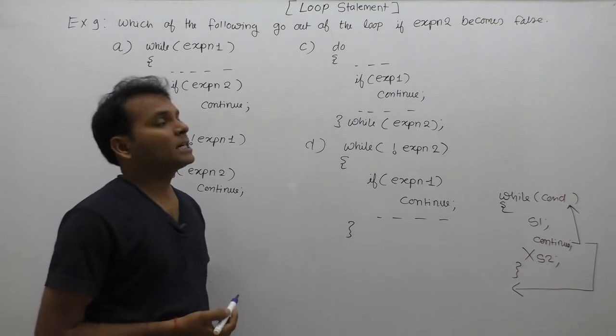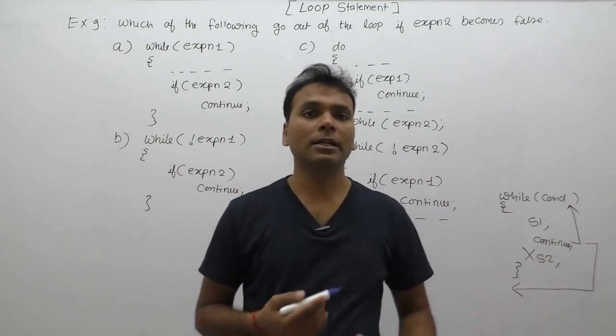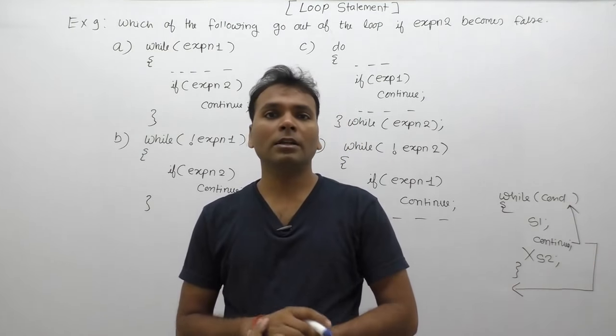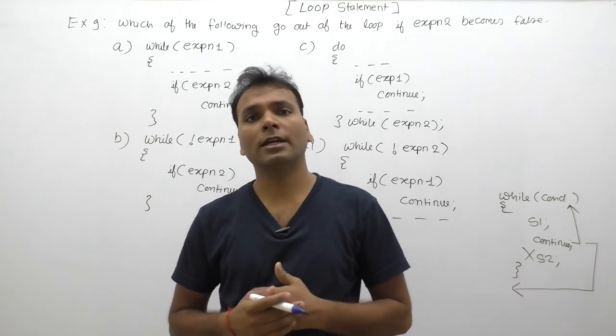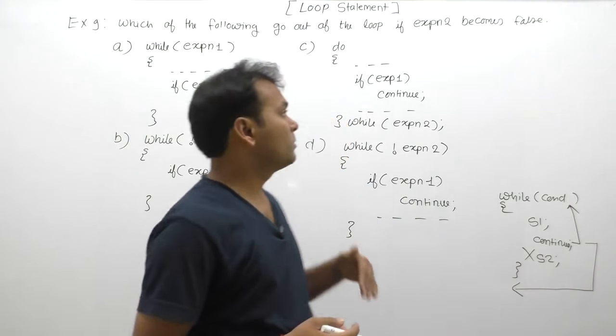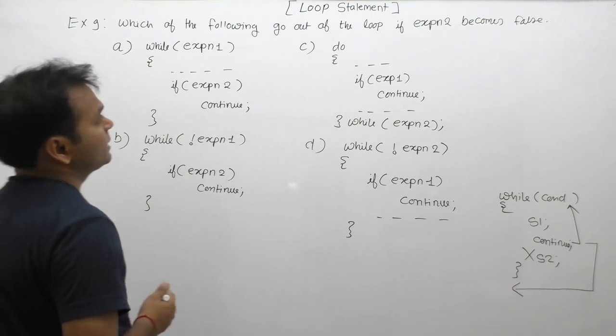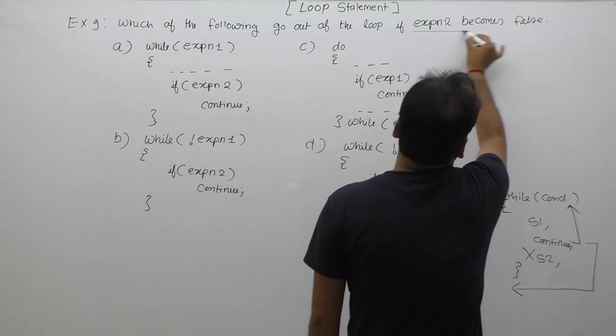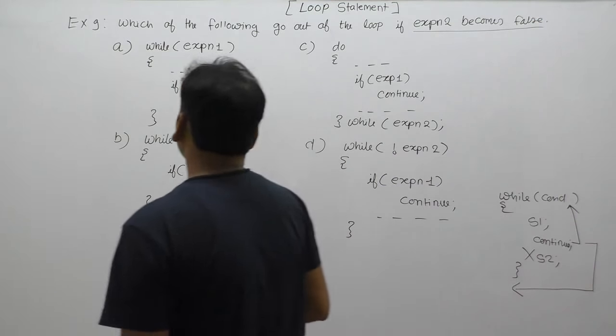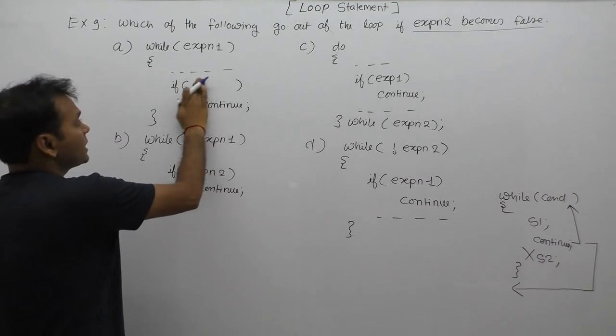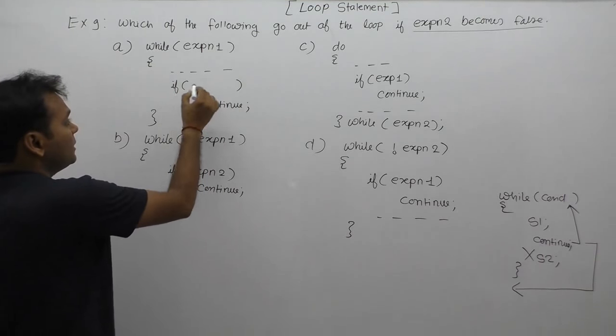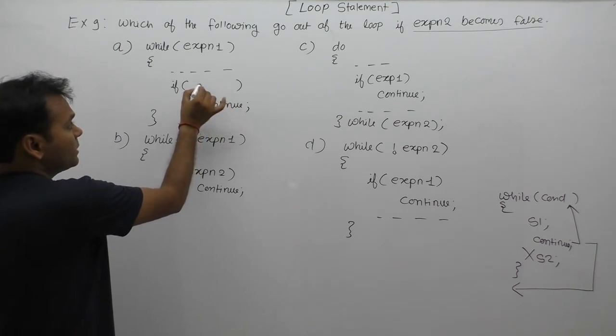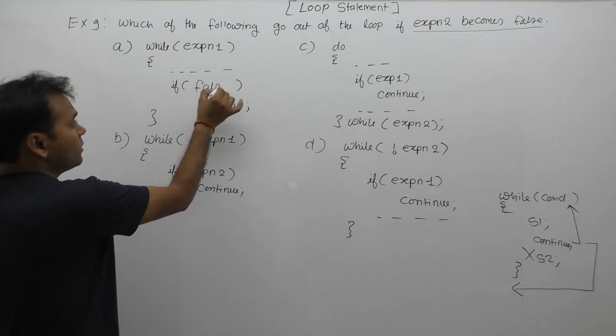If expression two becomes false, there are total four options given. Find out that option. Option one: expression one in place, and if expression two in place is false.